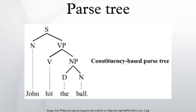S is the root node, NP and VP are branch nodes, and John, Hit, The, and Ball are all leaf nodes. The leaves are the lexical tokens of the sentence.